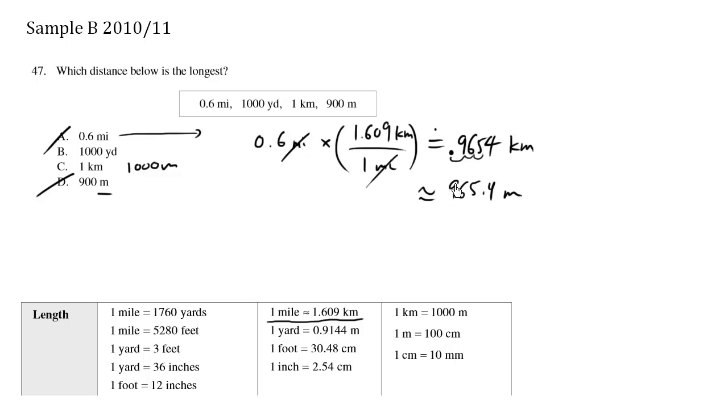Immediately we cross out choice A because one thousand is greater than 965. So the last one to look at is a thousand yards. Let's clean this out and focus on choice B. So far the champion is choice C.